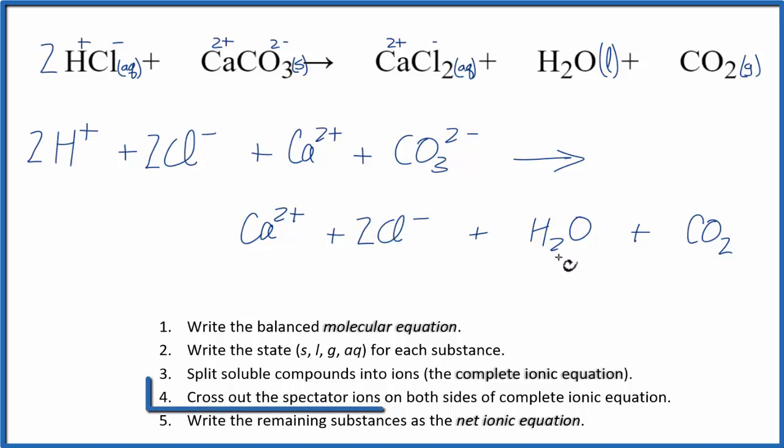Now we can cross out the spectator ions. These are the things that appear on both sides of the equation. Cl-, 2 of those, Cl-, 2 of those, they cross out. Ca2+, that's gone. But everything else is unique, it doesn't appear on both sides.